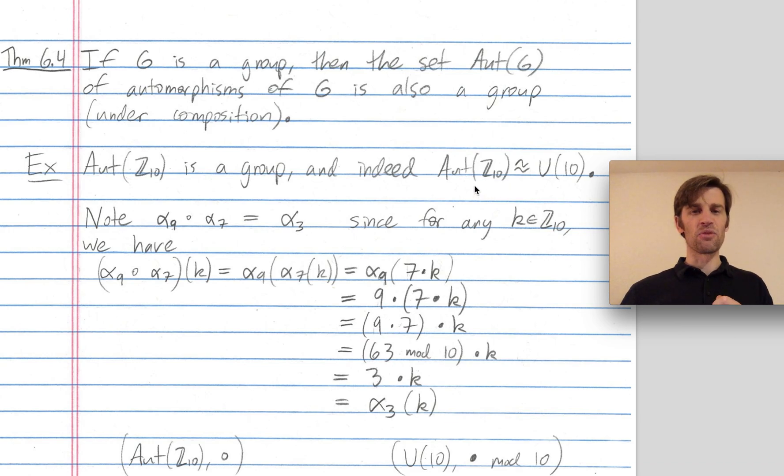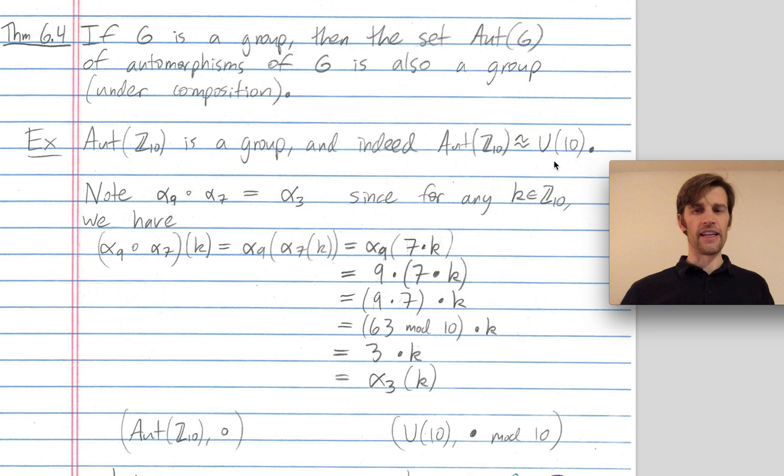It turns out that the automorphism group of Z_10 is isomorphic to the group of units mod 10 under multiplication mod 10. In U(10), you can take, for example, 9 and 7 and multiply them and get 63, which mod 10 is 3. In the automorphism group of Z_10, two of our automorphisms are alpha 9 and alpha 7. The group structures are preserved between these two groups. If I compose alpha 9 with alpha 7, I indeed get alpha 3.